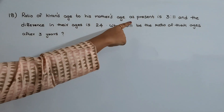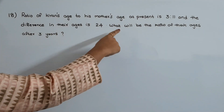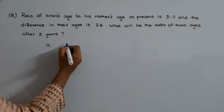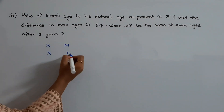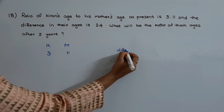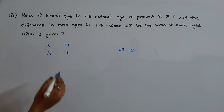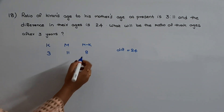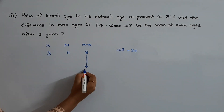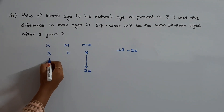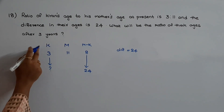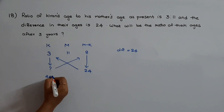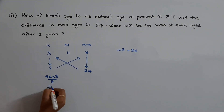The next question: the ratio of Kiran's age to his mother's age at present is 3 is to 11, and the difference in their ages is 24. What will be the ratio of their ages after 3 years? The difference in the ratios is 11 minus 3 equals 8. Since 8 corresponds to a difference of 24, Kiran's present age equals 24 times 3 divided by 8, which equals 9.